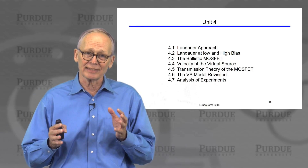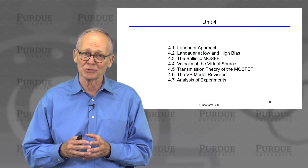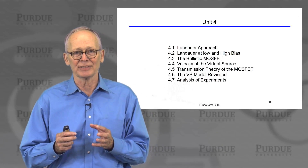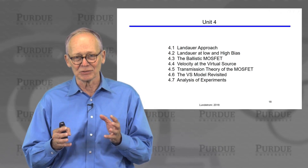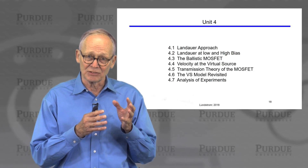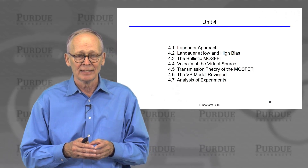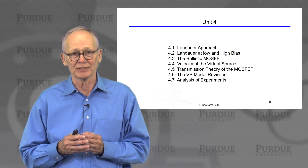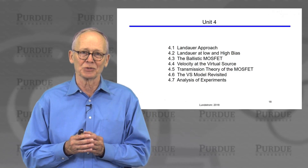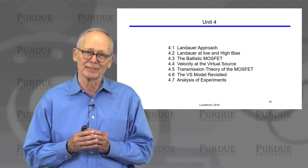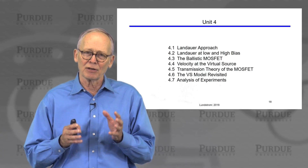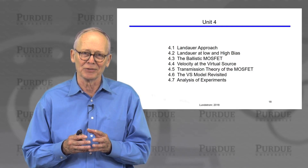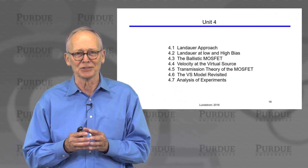Unit 4 really brings together everything we have been discussing in this course from day one. We now have a good comprehensive understanding of modern nanoscale MOSFETs, from the traditional diffusive case all the way to the ballistic and quasi-ballistic regime that modern transistors operate in. There is one more unit — Unit 5 — covering additional topics that anyone who works on transistors should know about.